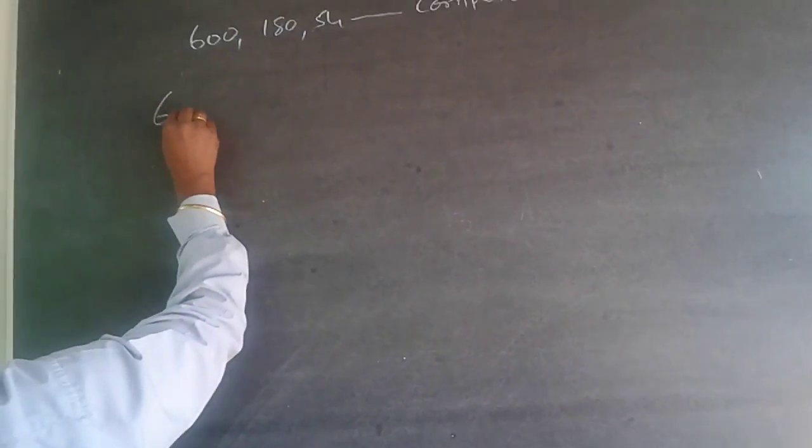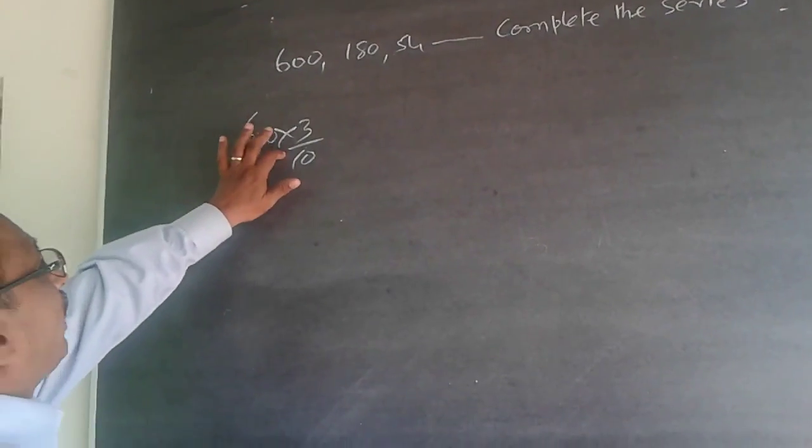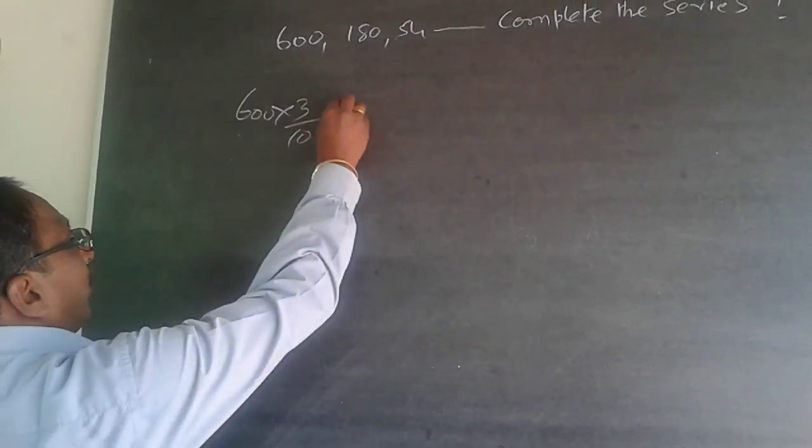So what happens is 600 × 3 ÷ 10 = 180, because this will become 1800. I want 180, so the pattern is ×3 ÷10.